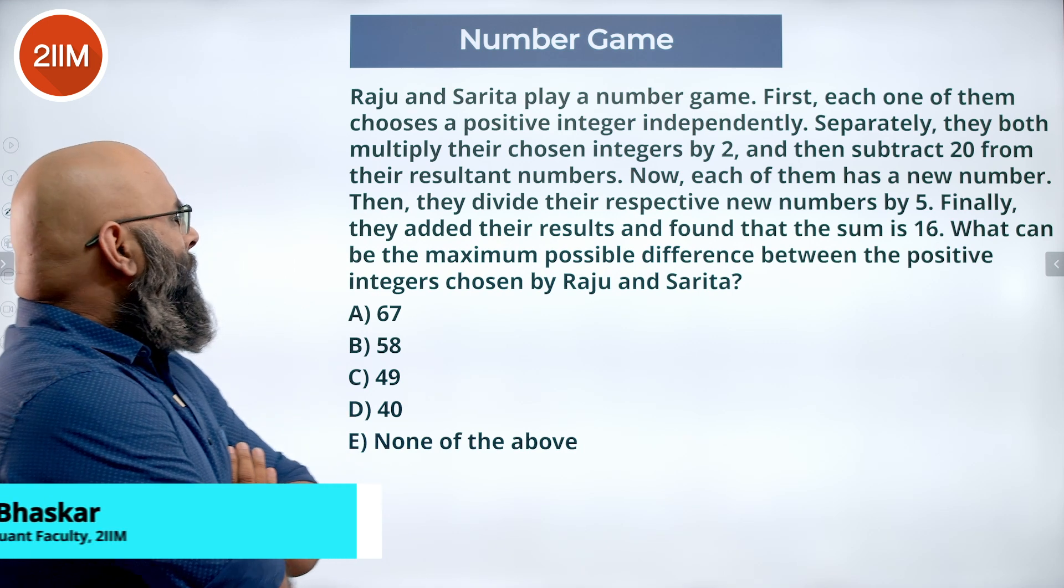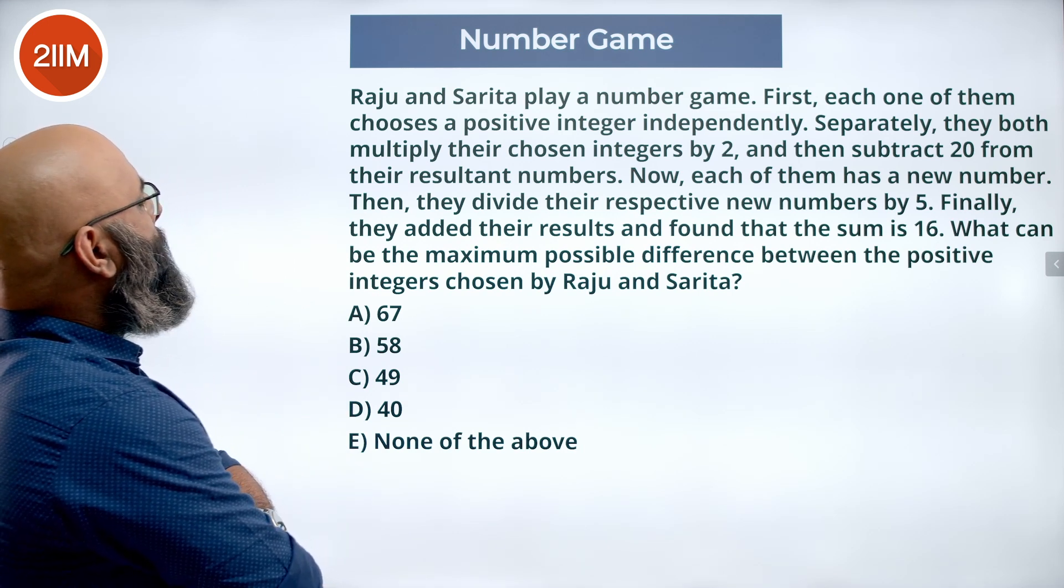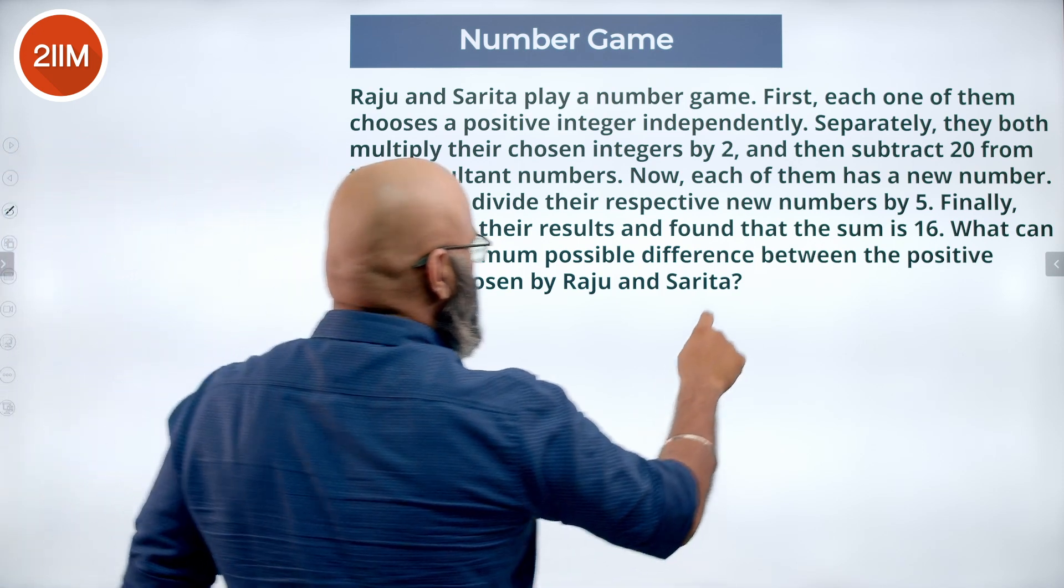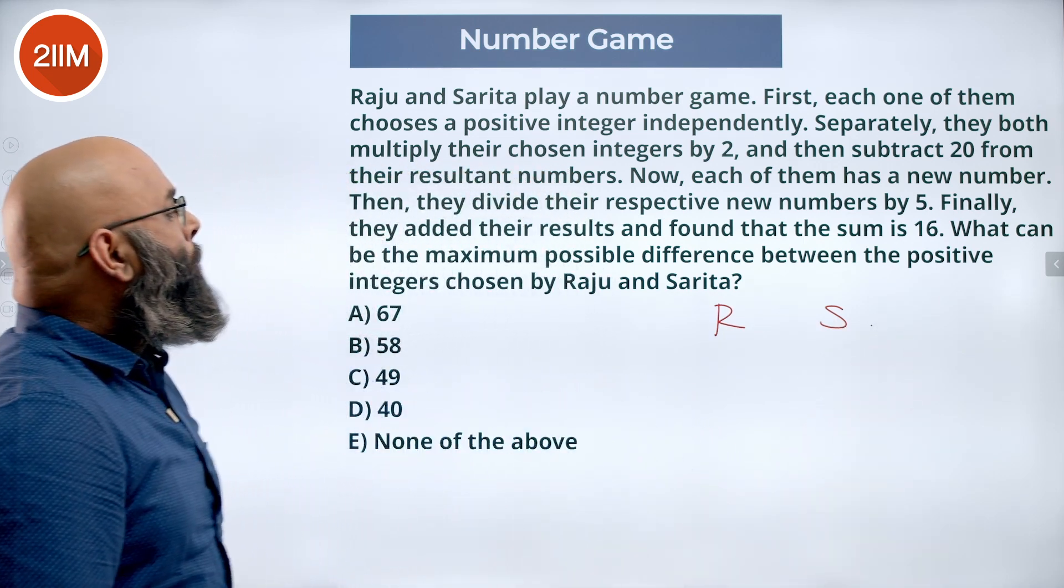The number game. Raju and Sarita play a number game. First, each of them chooses a positive integer independently. So let's say Raju chooses R and Sarita chooses S separately.